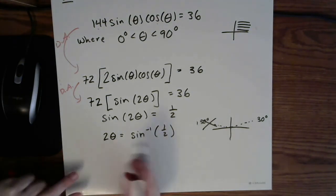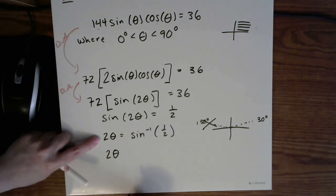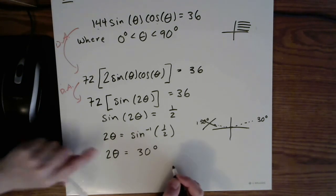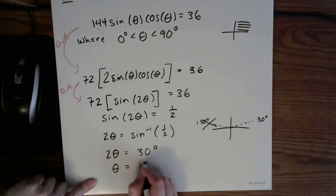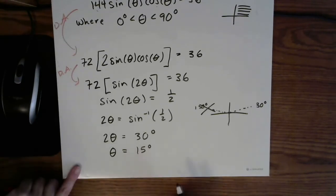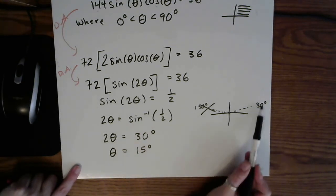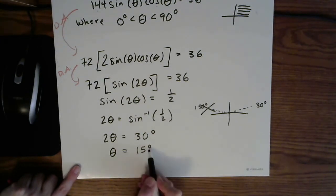So that tells me that 2θ, remember that 2 is still out in front, is equal to 30 degrees. Or finally, dividing both sides by 2, θ equals 15 degrees. Notice when I wrote down my solutions, I was very careful to write things in terms of degrees because of the original restriction, and use the degree symbol. So here's your solution.